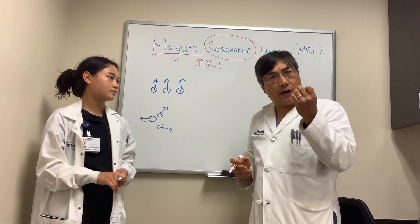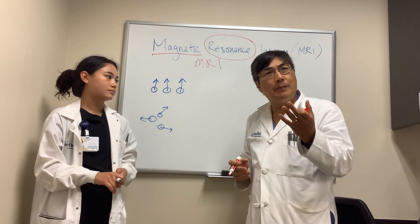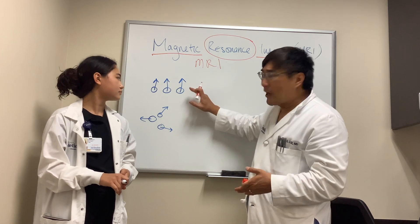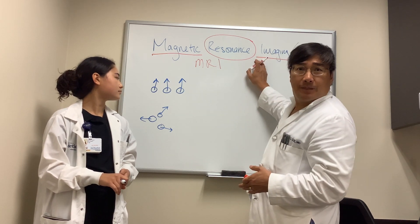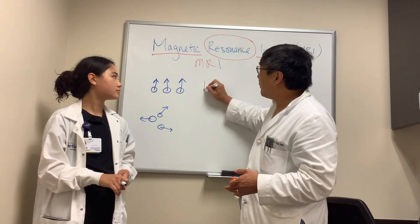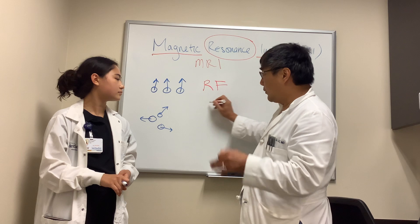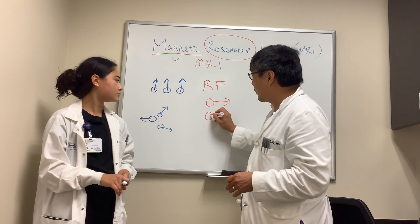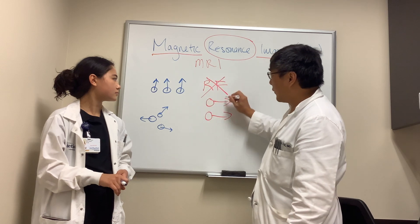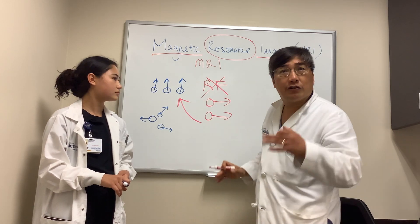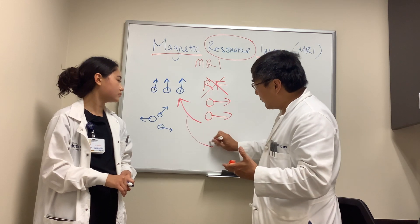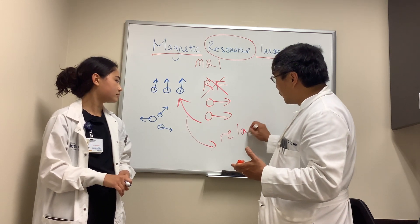Resonance is vibration, and so when you hum or sing, you are resonating. It is that resonance that we can image. Because when you put the hydrogen in the giant magnet and apply a radio frequency pulse to it, all of the protons will now be oriented in the transverse plane. When you turn off the radio frequency pulse, they will return to the resting equilibrium state. That return is called relaxation.